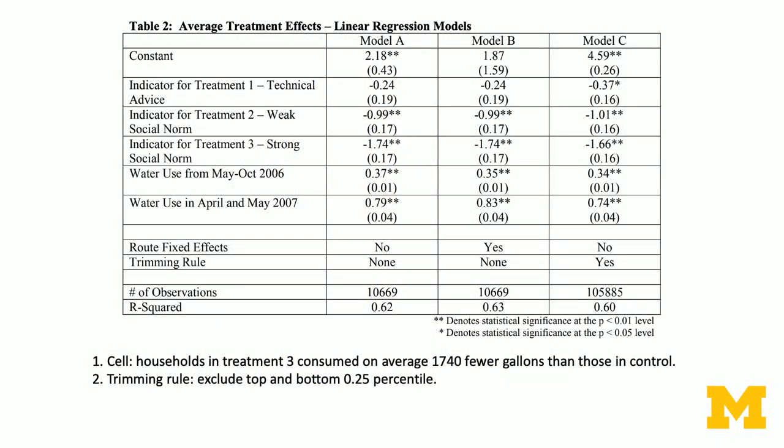The coefficients of the three indicator variables are all negative, which is good — it says that the treatment has an effect and it reduces water usage. However, the indicator for treatment one, which is the technical advice, is not statistically significant, whereas those for treatments two and three are both statistically significant.